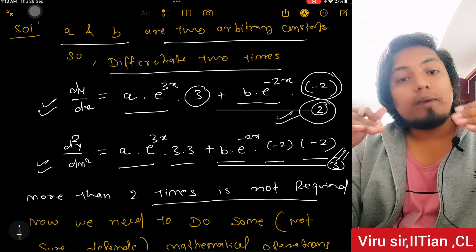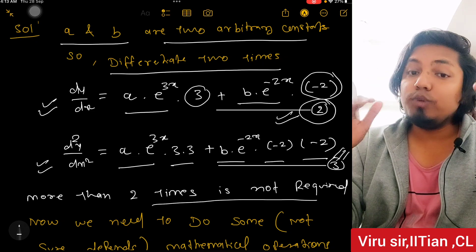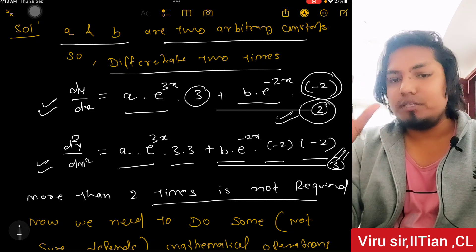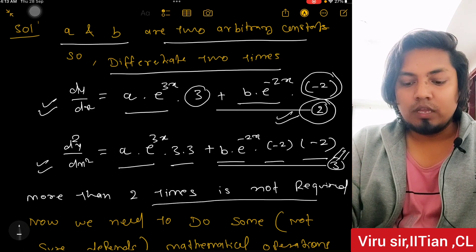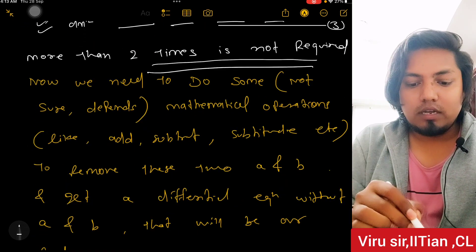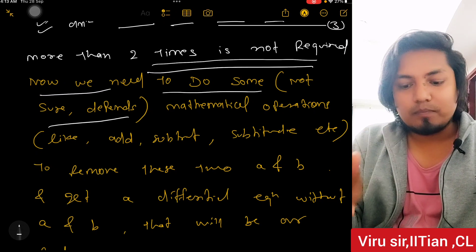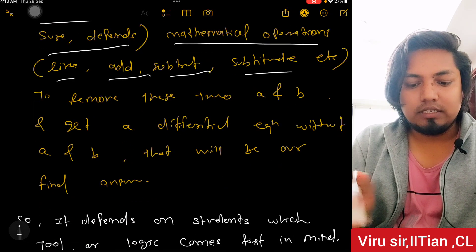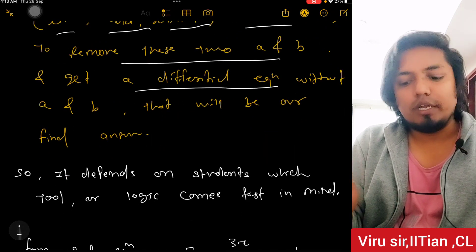Different types and varieties of problems I will be explaining here — that should be sufficient. More than two differentiations are not required. Now we need to do some mathematical operations — add, subtract, substitute, etc. — to remove A and B and get the differential equation without A and B. That will be our final answer.